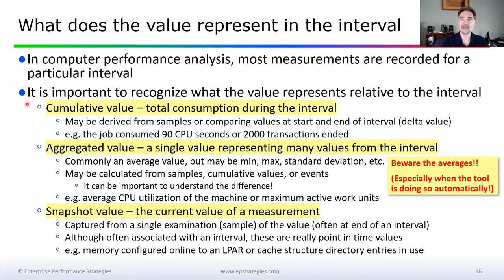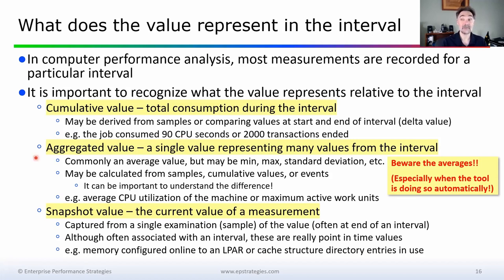The next step is understanding what the value represents in the interval. There are three types of values. First is a cumulative value, which measures total consumption during the interval — derived from samples or by deltaing start and end values — giving results like 'the job consumed 90 CPU seconds' or 'you processed 2,000 transactions.' Second are aggregated values: a single value representing many values during the interval, commonly an average but could be a min, max, or standard deviation.